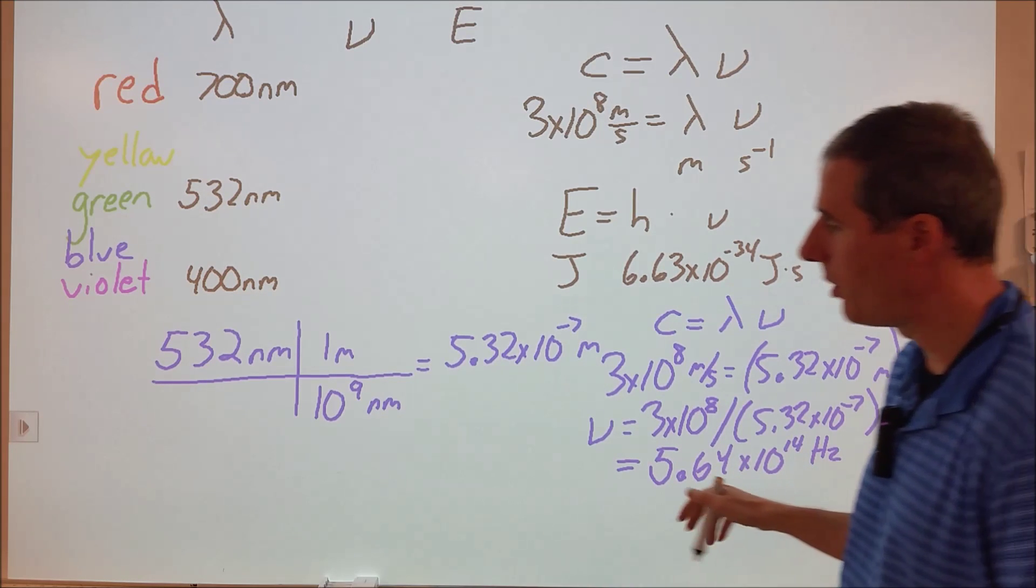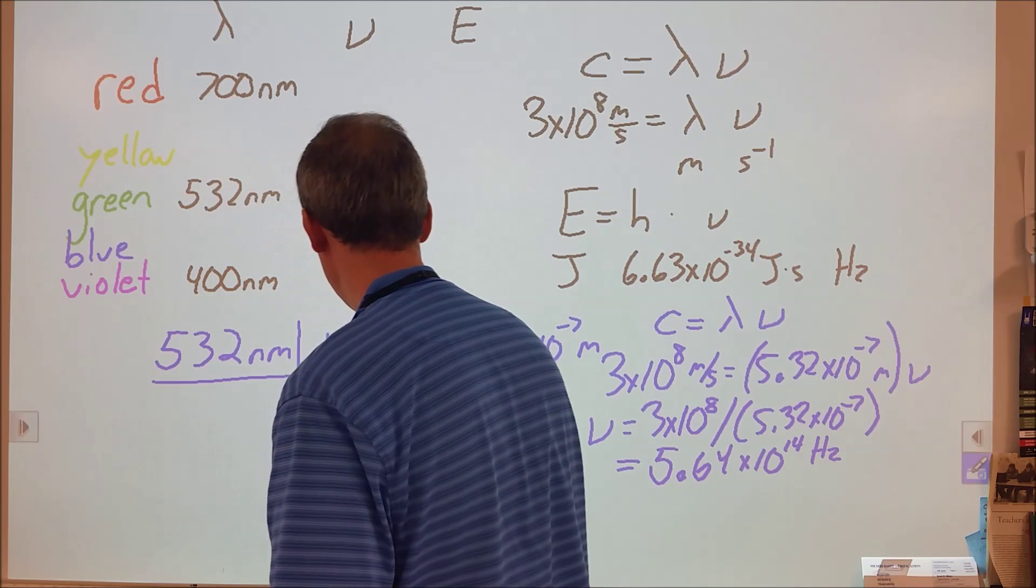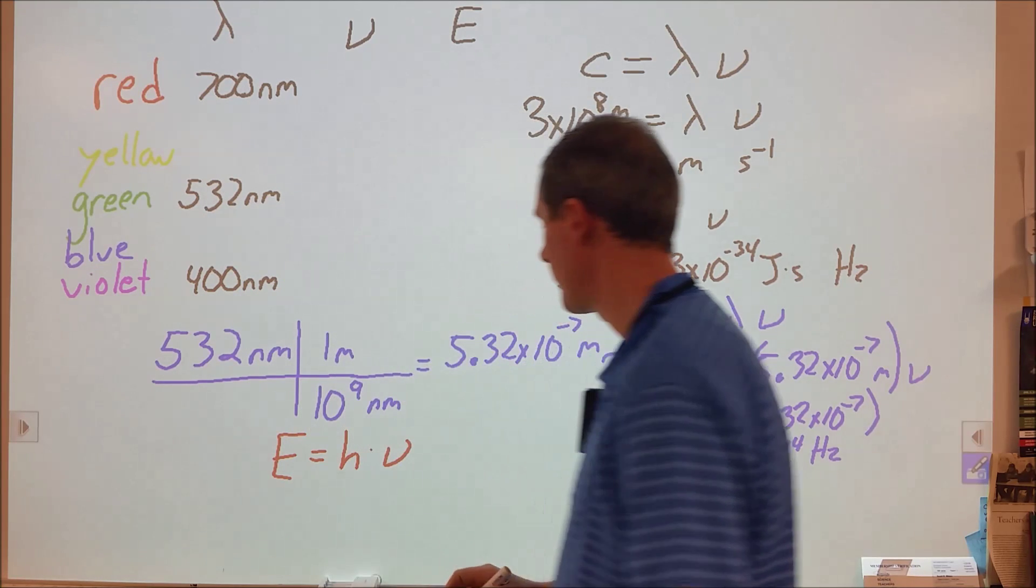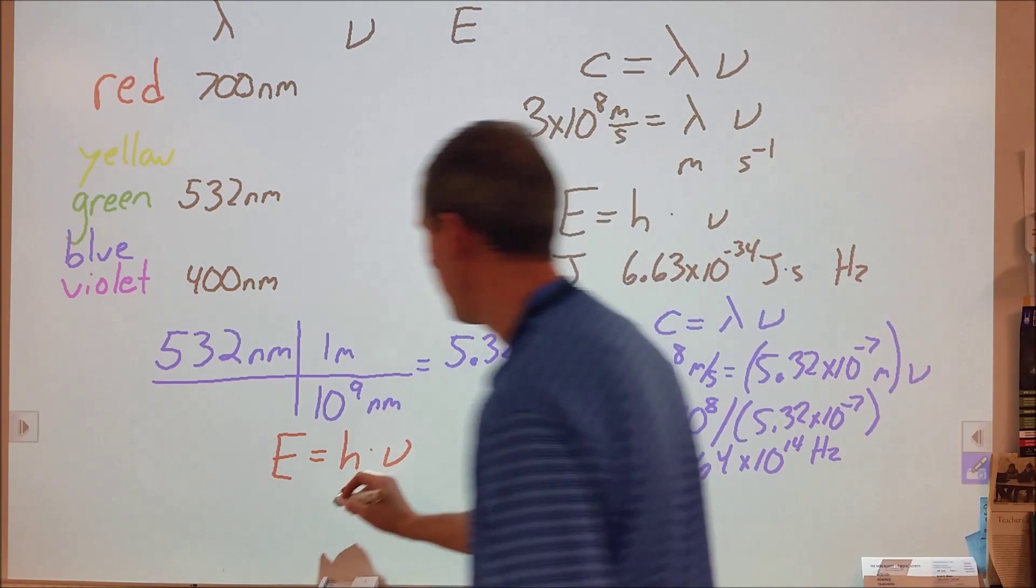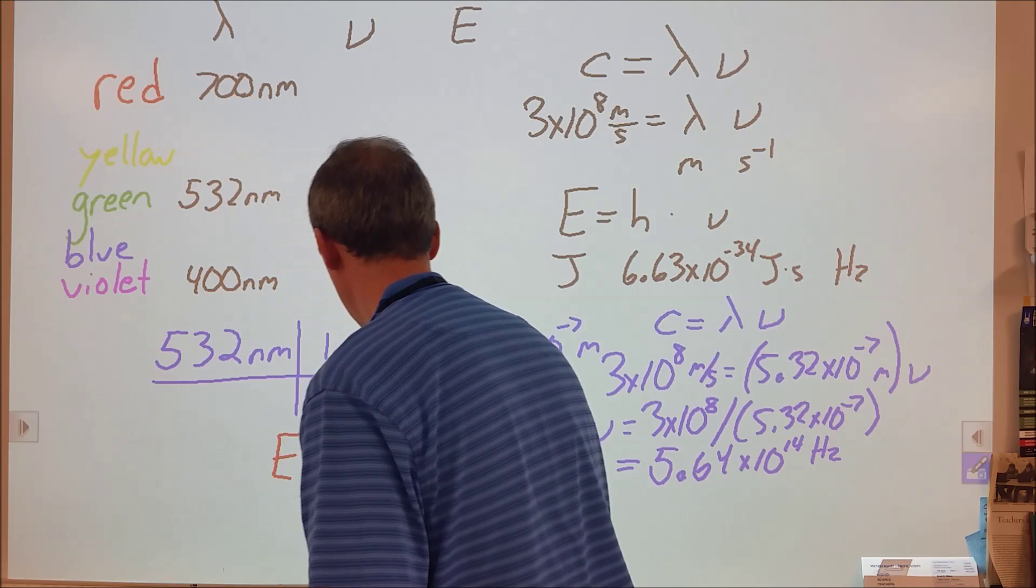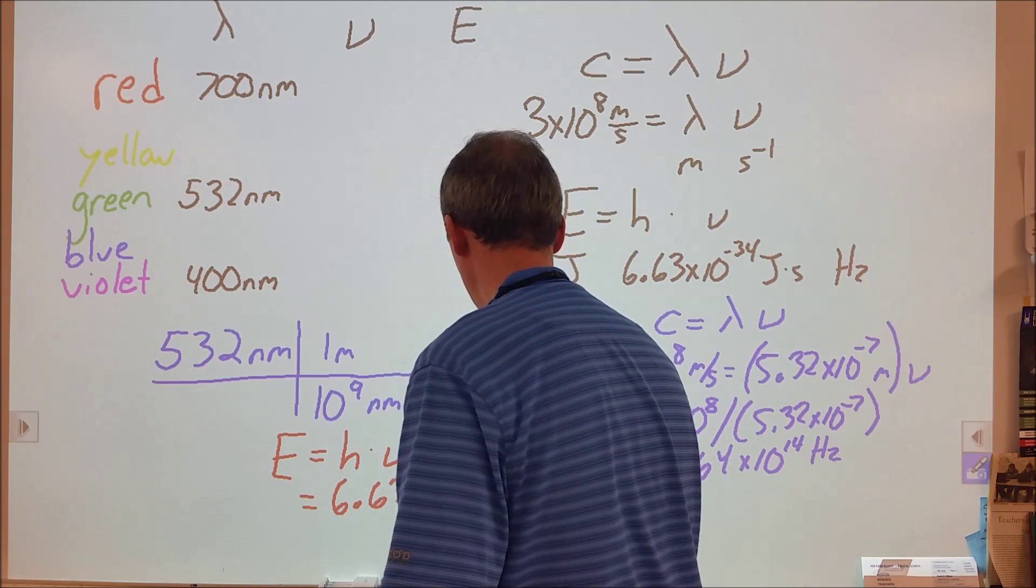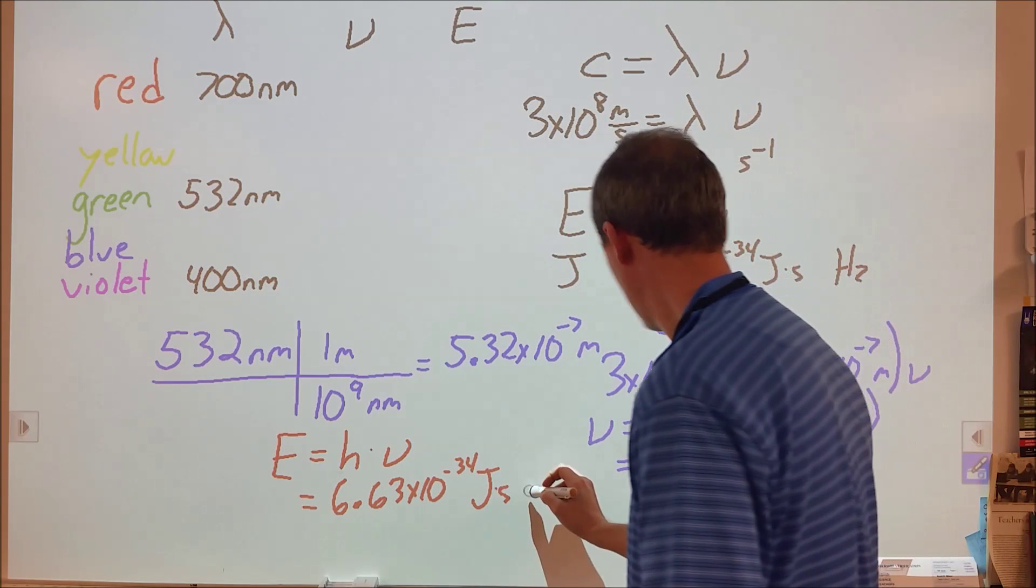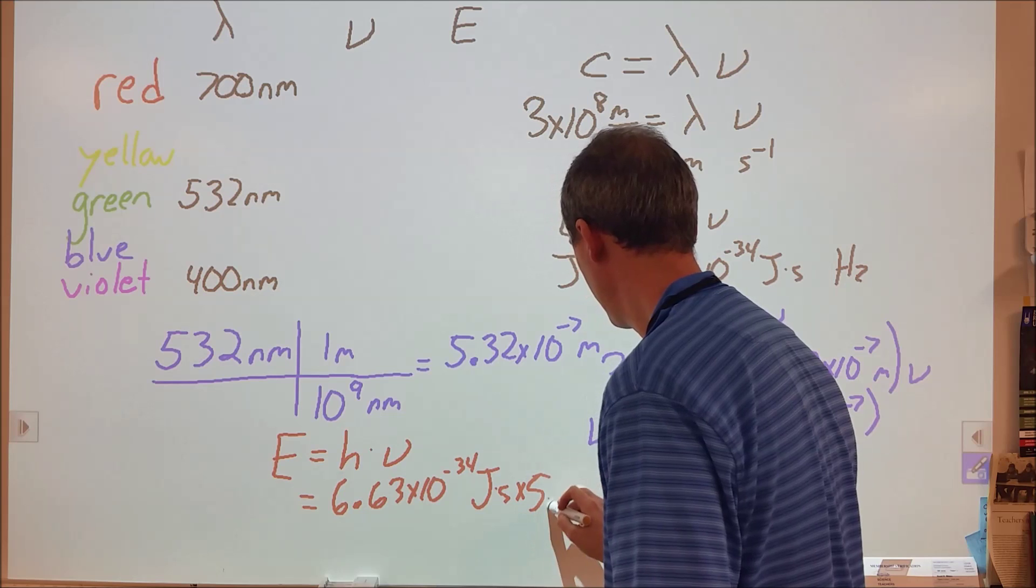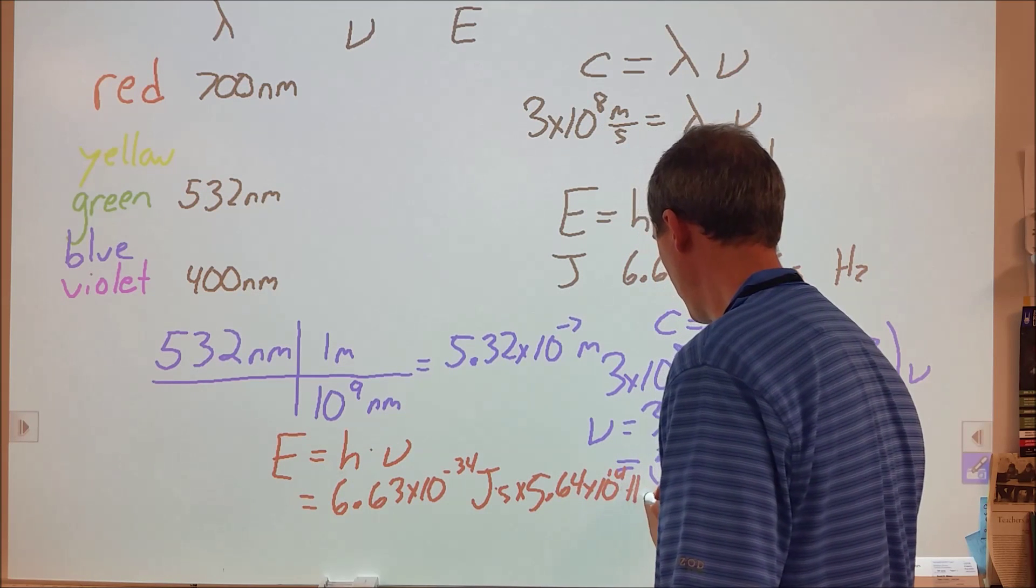What we can also do is we can take this number here and plug into our second equation, energy is equal to Planck's constant times frequency. We can now take this 5.64 times 10 to the 14th hertz and multiply it by Planck's constant.